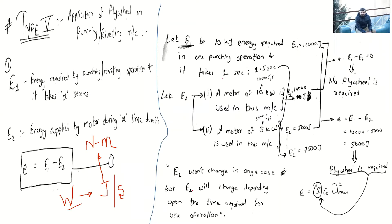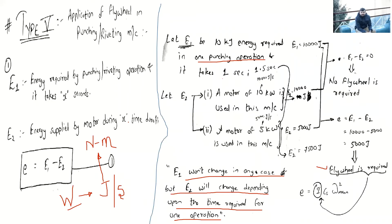E1 — the energy required for the punching operation — won't change in any case, since we are punching on the same piece of metal. But E2 will change depending on the time required for one operation. As punching time increases, the energy supplied by the motor increases, and the flywheel requirement will also vary.